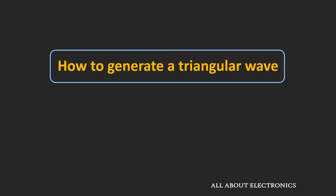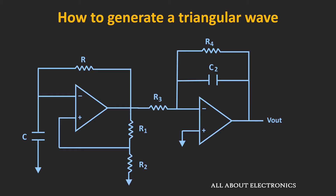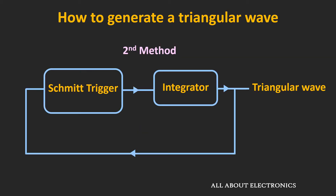Hey friends, welcome to the YouTube channel All About Electronics. In the first part of this video, we have seen how to generate a triangular wave using the astable multivibrator and the integrator circuit. In this video, we will see the second method — how we can generate a triangular wave using the Schmitt Trigger and the integrator circuit.